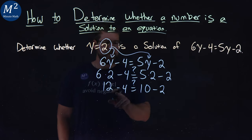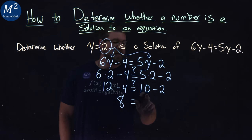Again, order of operations, still following, subtraction is next. 12 minus 4 gives me an 8, and 10 minus 2 is also an 8.